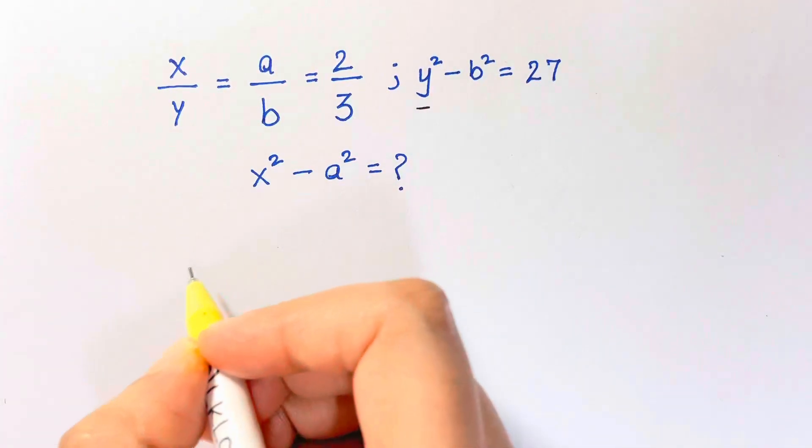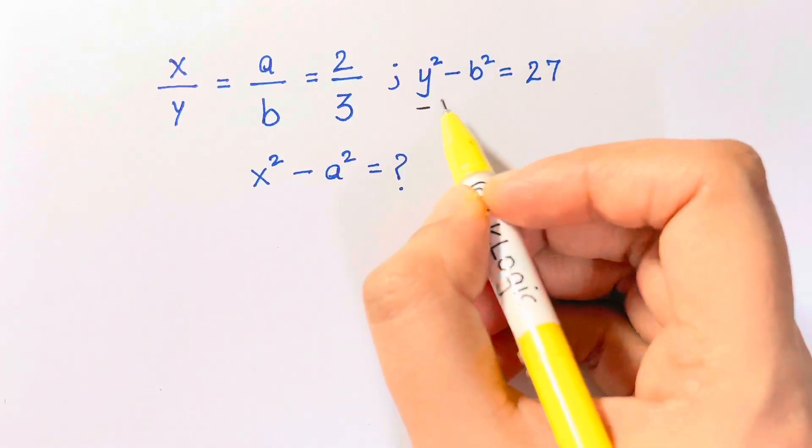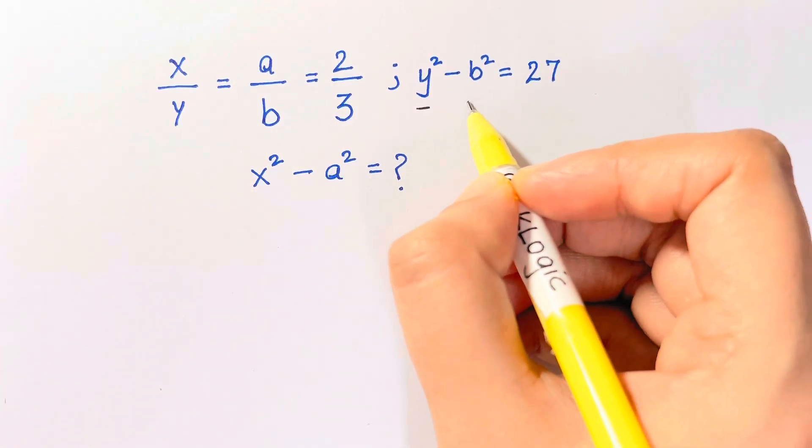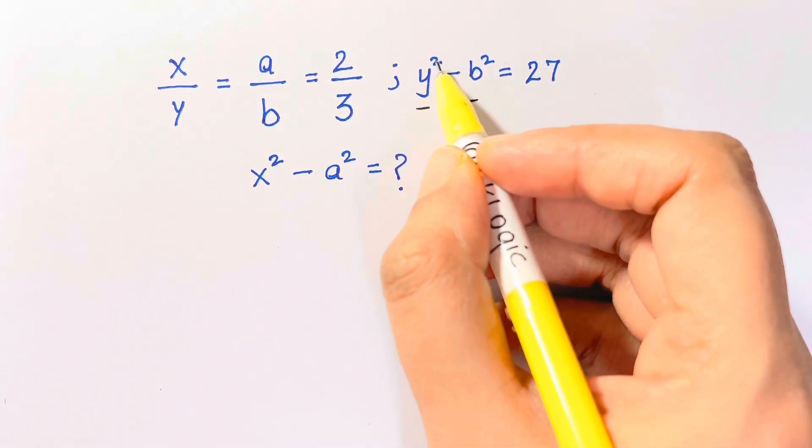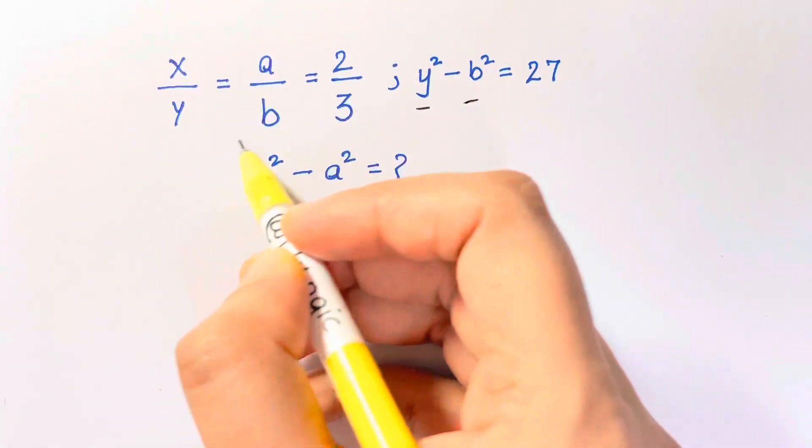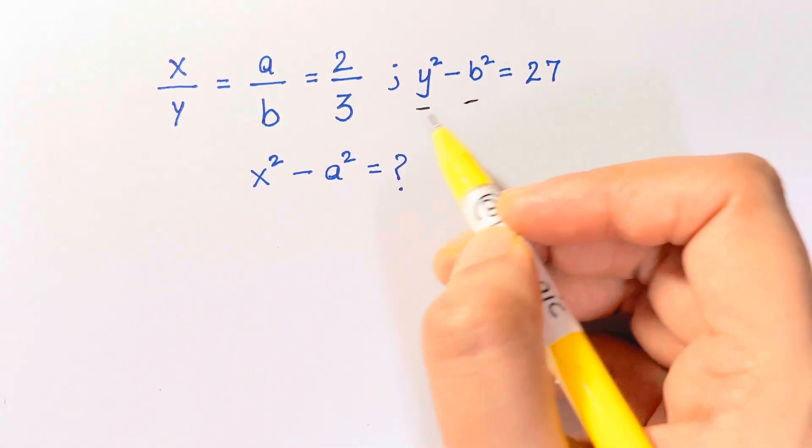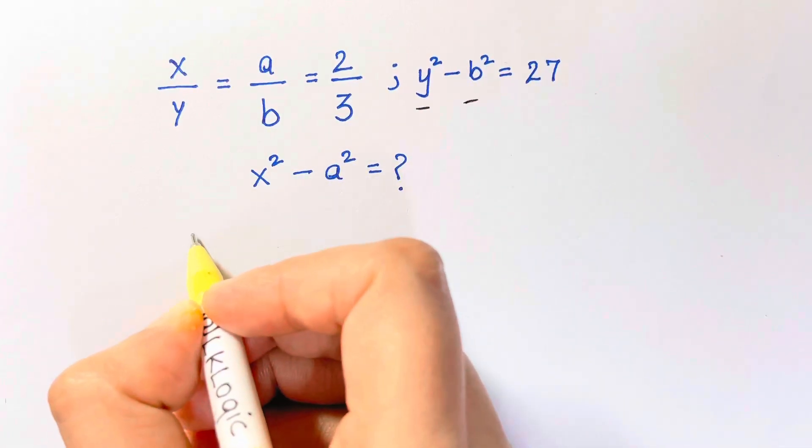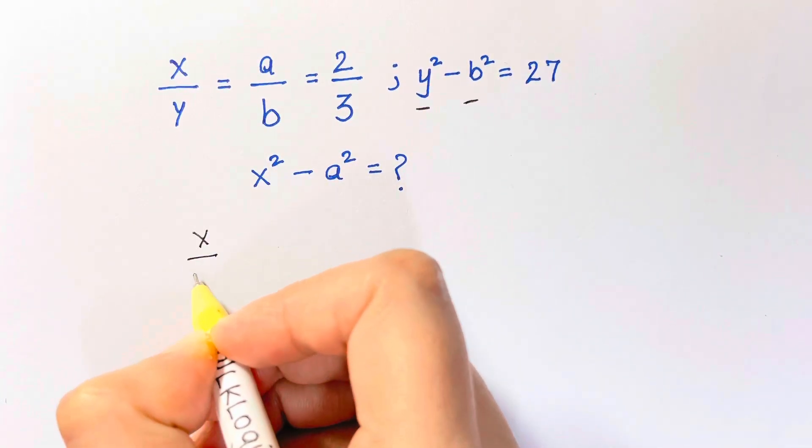Now let's work out for this equation. What do we have here? We have y square minus b square, so we are going to change this equation in terms of y square and b square. Let's find out. From here I can take x over y.